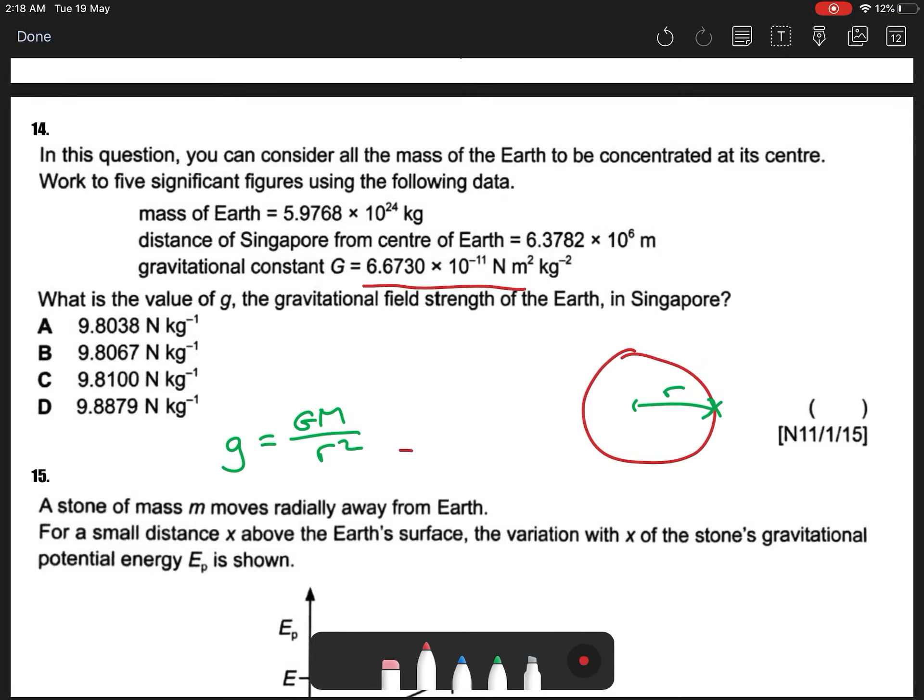Okay, so you will get the gravitational field strength of the Earth. 9, okay! It has 5 significant figures, right? Okay, 9.8038. Okay, 8038, so your answer is A, okay, A.